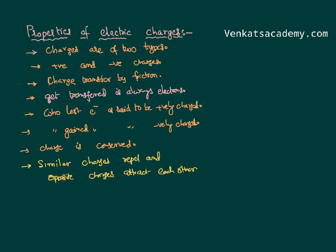Opposite charges attract each other. When charge transfer happens from one body to another, it always occurs in integral multiples of electrons — meaning either one electron, two electrons, or three electrons get transferred. A fractional amount like 1.5 electrons will never be transferred.